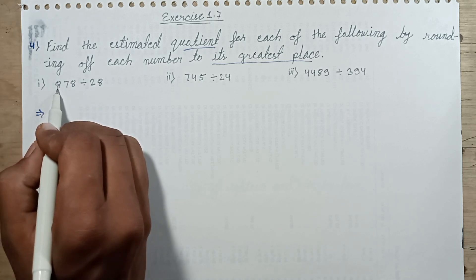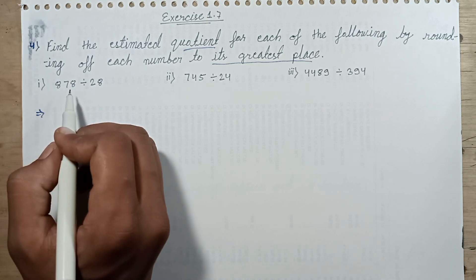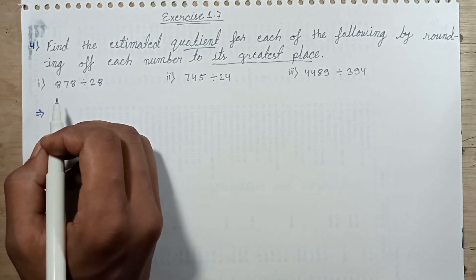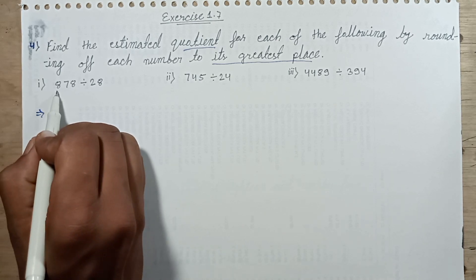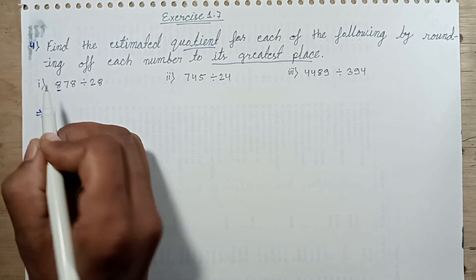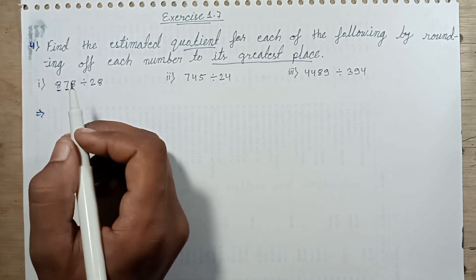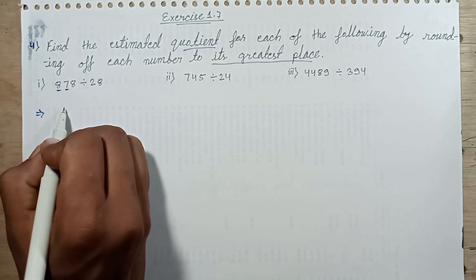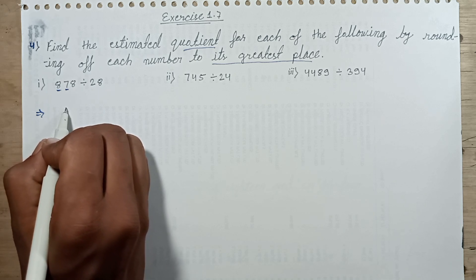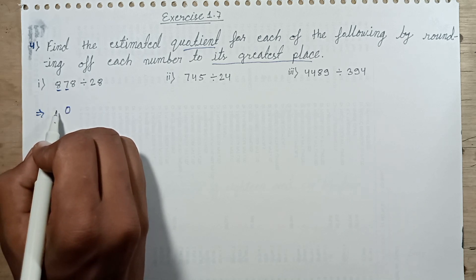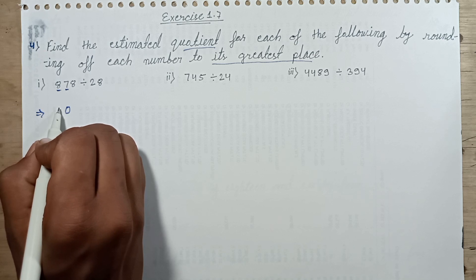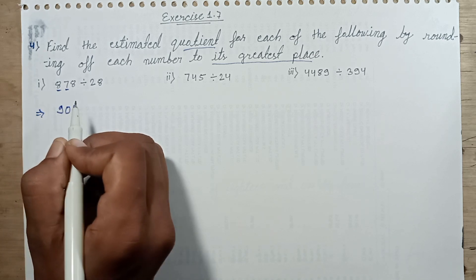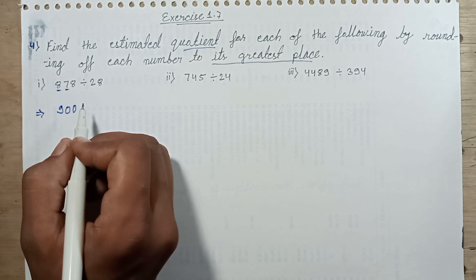878 — the hundreds place digit is greatest. The greatest number is 800. The tens place digit is 7, and 7 is greater than 5. So 7 is replaced with 0 and the hundreds place digit increases by one: 8 plus 1 is 9. The ones place digit is also replaced with 0.